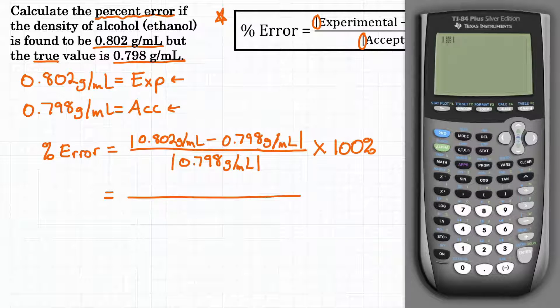If you don't have a graphing calculator you can just take the positive if your answer is negative. So on top of our fraction we have 0.802 and we're going to subtract 0.798. Hit enter and we get 0.004.